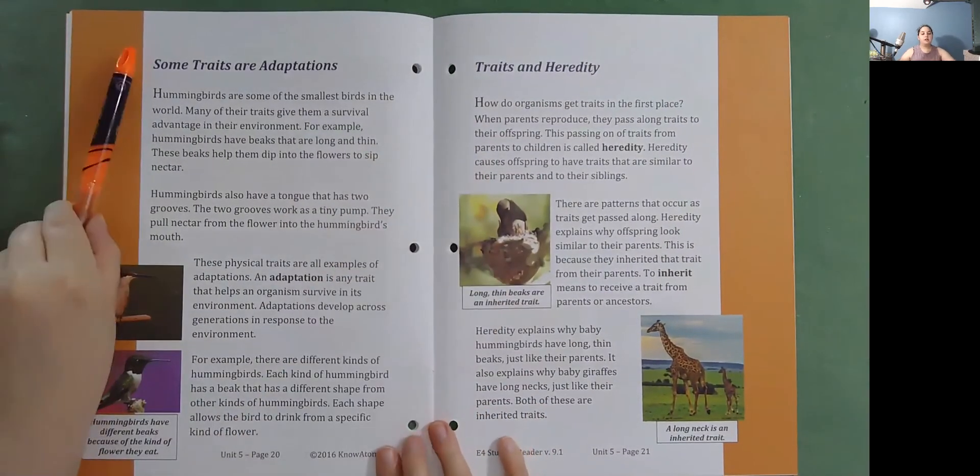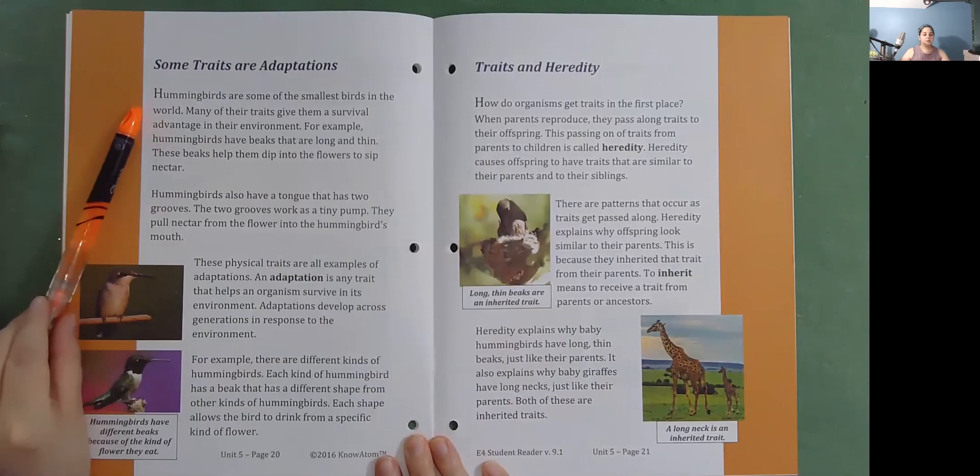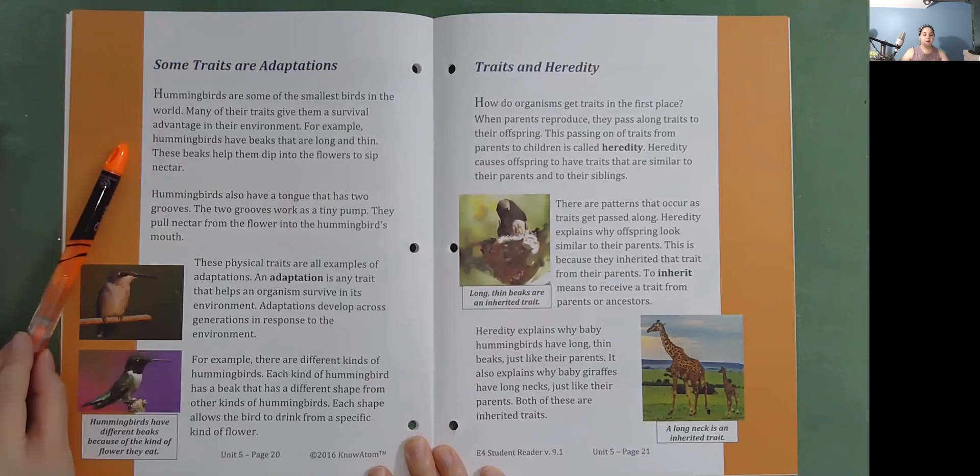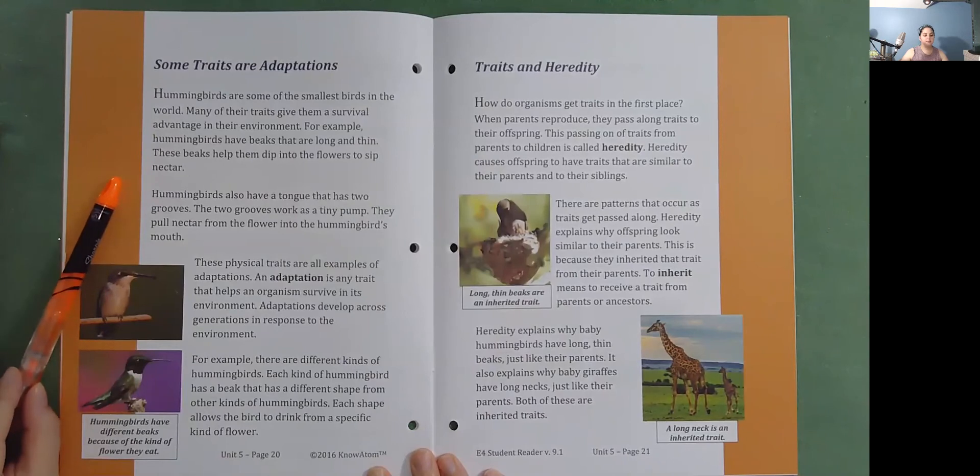Some traits are adaptations. Hummingbirds are some of the smallest birds in the world. Many of their traits give them a survival advantage in their environment. For example, hummingbirds have beaks that are long and thin. These beaks help them dip into the flowers to sip nectar. Hummingbirds also have a tongue that has two grooves. The two grooves work as a tiny pump. They pull nectar from the flower into the hummingbird's mouth.